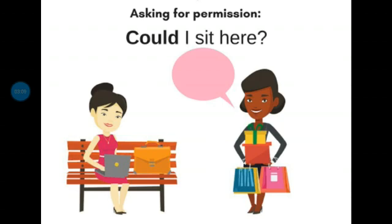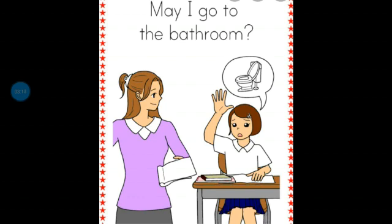The next one is: one girl is sitting, and she is taking permission from the teacher. May I go to bathroom? Or, may I go to washroom? Or, may I go to toilet? You can use any of these sentences if you want to go to the bathroom, washroom, or toilet. What you have to ask your teacher, as well as at your home, what you have to ask your mother: May I go to bathroom? May I go to the toilet? Or, may I go to the washroom? Got it, students?